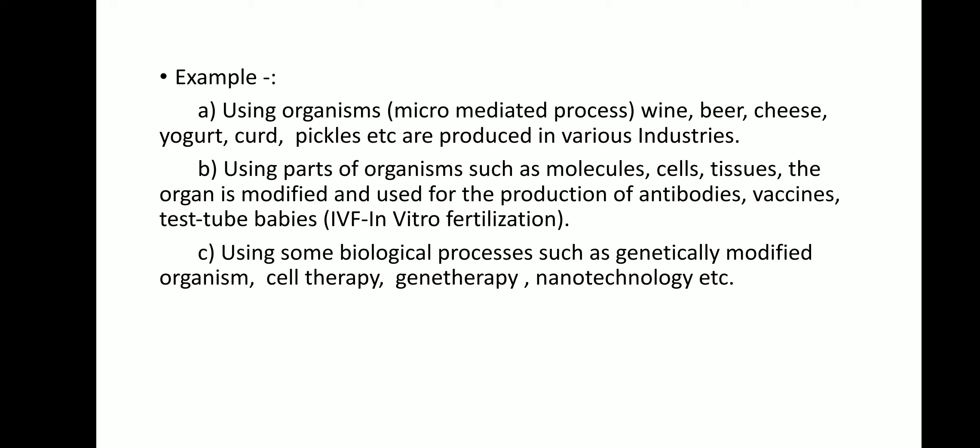The next example is using parts of organisms. The parts of an organism are molecules, cells, tissues, and organs. These molecules, cells, tissues, and organs are modified and used for the production of antibodies, vaccines, insulin, test tube babies in in vitro processes, and various types of medicines.